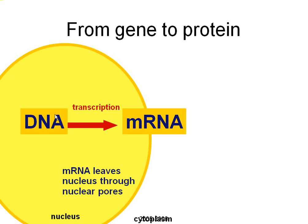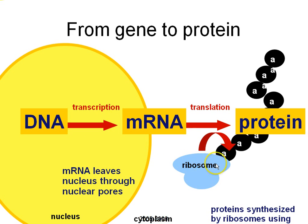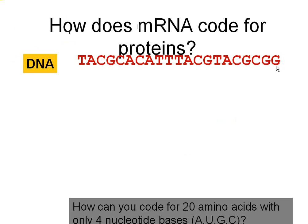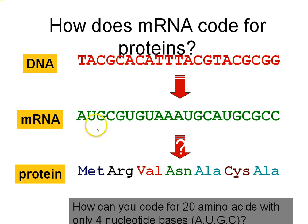DNA makes a messenger RNA copy through transcription. Messenger RNA is processed and leaves the nucleus. Then messenger RNA hooks up to a ribosome, using the codons on the messenger RNA to string together the correct order of amino acids in our protein. T codes for A on messenger RNA; A normally codes for T on DNA. All T's are replaced by U's in RNA. C codes for G, G for C. Once we have our messenger RNA nucleotides in the right order, we can figure out our amino acids in the protein using the genetic code. You won't need to memorize it.